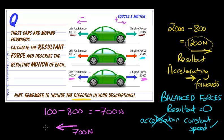So therefore we're going to be, what are we going to be doing? Are we going to be constant speed? No because we have a resultant force. Are we going to be accelerating forwards? No because the resultant force is acting backwards.